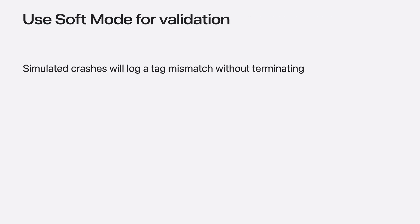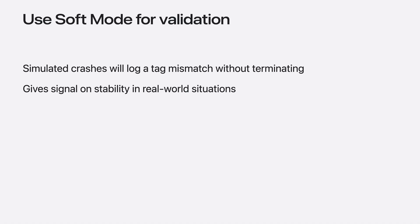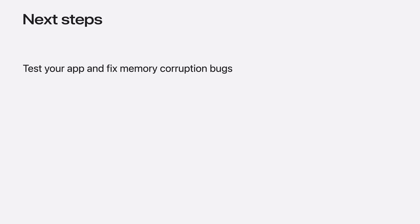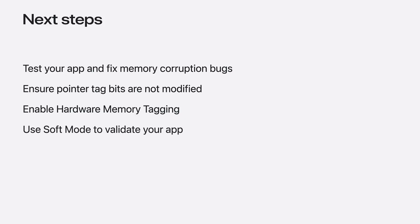Soft mode helps you validate that you have found and fixed the memory corruption bugs in your app. It provides telemetry for tag mismatches in the form of simulated crash logs without terminating execution. Enable this in your TestFlight and customer populations to gain confidence that there are no remaining memory corruption bugs. Once your memory corruption bugs are fixed, disable soft mode to protect your users. Here are your next steps: if your app handles unvalidated inputs, adopt memory integrity enforcement to protect your users — it is especially important for messaging, social media, and browser apps. Get your app ready by fixing known memory corruption bugs and ensuring your app isn't using pointer tag bits for other purposes. Test your app with hardware memory tagging diagnostics enabled, and validate your fixes using soft mode. Then disable soft mode to protect your users.